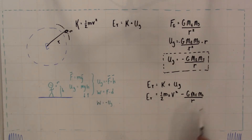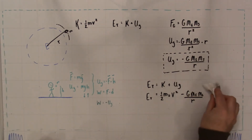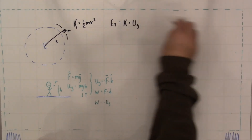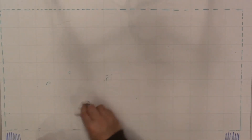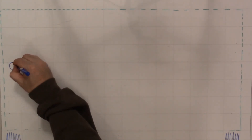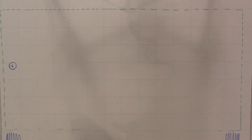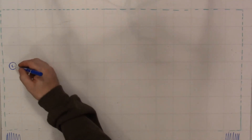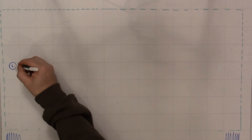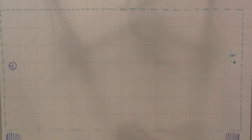The negative sign is going to be an important idea. Because the gravitational force is attractive — it pulls two things together — let's consider a thought experiment. Take the Earth, put it here, then take a ball and pull it all the way out to a distance of infinity, and let it go from rest, so velocity equals zero.